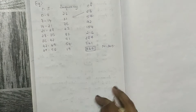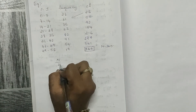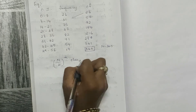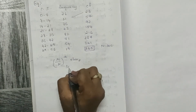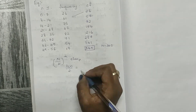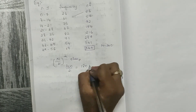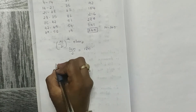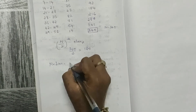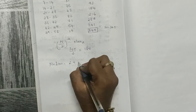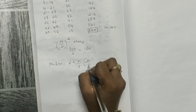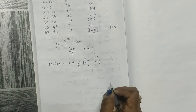Now the first step is to find n/2: 360 divided by 2 equals 180. We will now apply the median formula to get the exact value. The formula is: median = l + (h/f) × (n/2 − c).